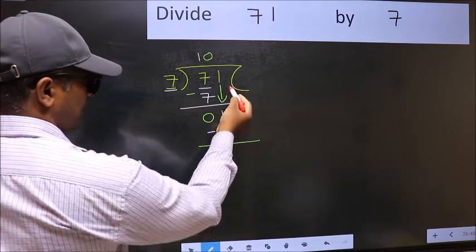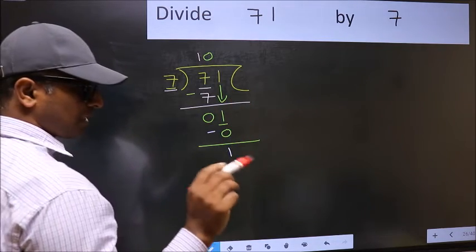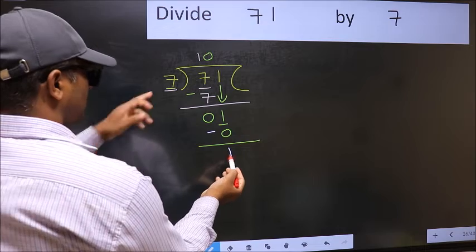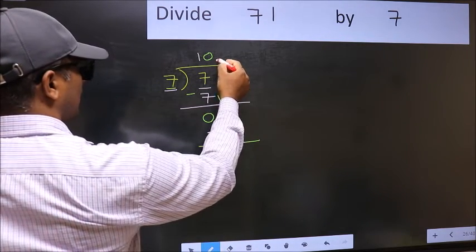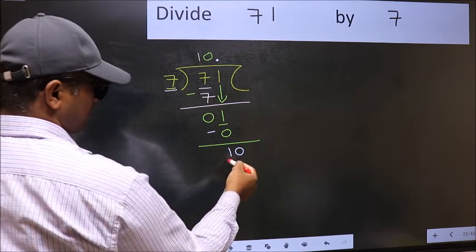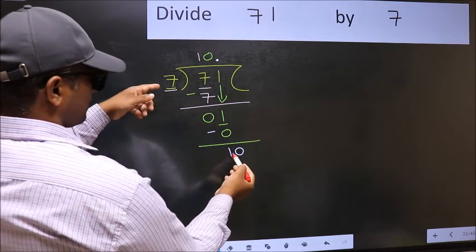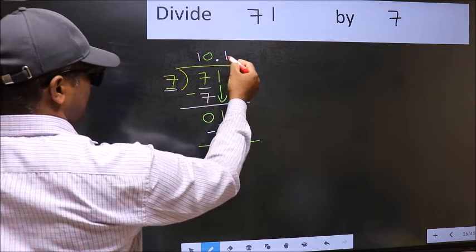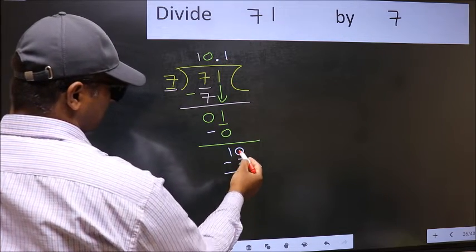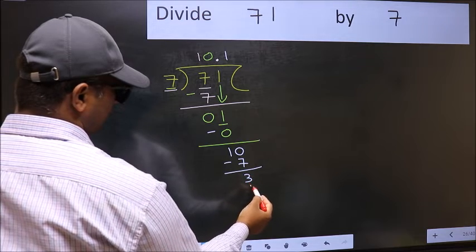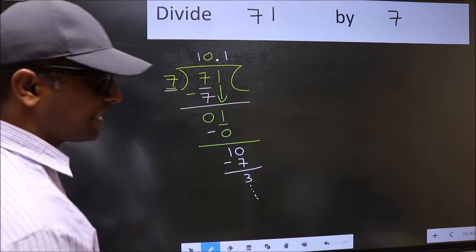So we did not bring any number down, and 1 is smaller than 7. So now you can put dot and take 0. So 10. A number close to 10 in 7 table is 7 once 7. Now you subtract, you get 3, and continue the division. I am not doing that.